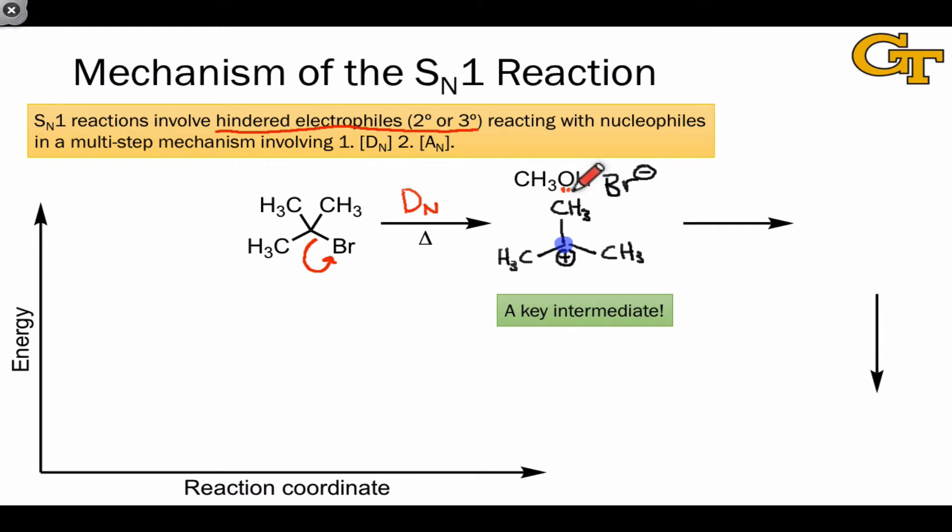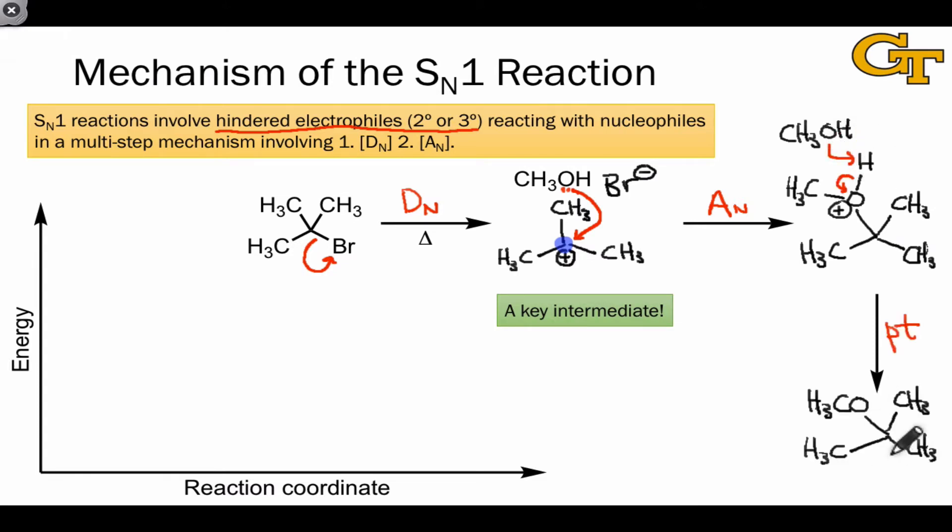This electrophile reacts with the nucleophile, here methanol, in an AN elementary step to form what is in this case a positively charged intermediate since the nucleophile started out neutral. Deprotonation of this intermediate, often by a molecule of solvent during workup, leads to the final product.